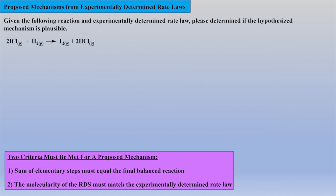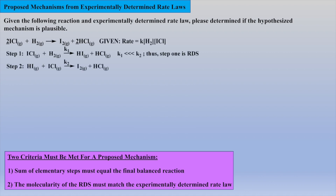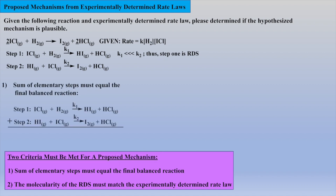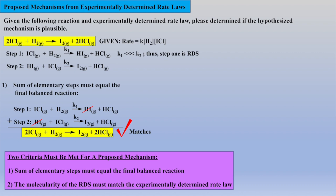In the first example reaction, we are given a previously experimentally determined rate law. A mechanism has been hypothesized, and we are asked if this mechanism is plausible. We have to determine if this hypothesized mechanism meets both criteria. Let's check to see if the sum of both elementary reactions equals the final balanced reaction. Canceling the intermediate HI before adding the proposed elementary reactions affords the final reaction, which does match the stoichiometry of the given reaction.